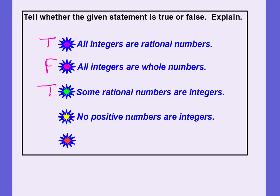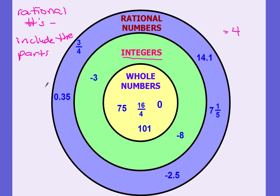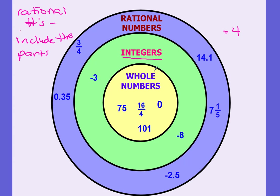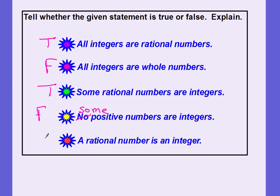'No positive numbers are integers.' Looking at the integer circle, I see negative numbers, but I also see the whole number circle inside it, and those whole numbers are positive — and they are considered integers because they're inside the integer circle. So this is a false statement; it should say 'some positive numbers are integers.' The last one: 'A rational number is an integer.' Is the rational number circle inside the integer circle? No — rational numbers include integers, but they're not all integers because integers don't have the parts. Only rational numbers have the parts. This one is also false. To make it true, you could say 'some rational numbers are integers.'